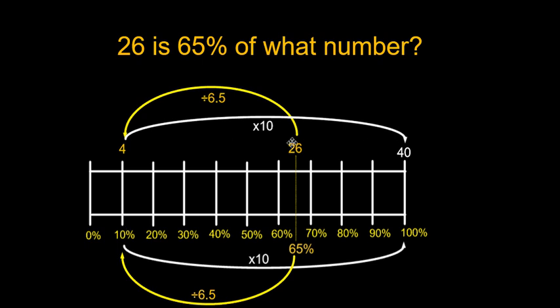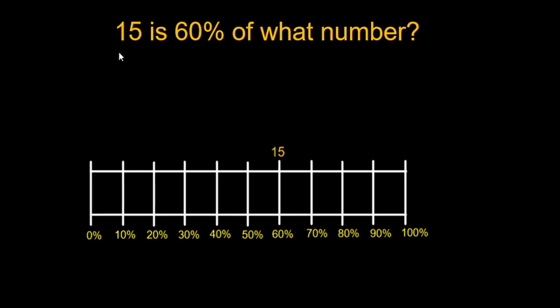Now, not all numbers are going to work out this nicely, and you may have to go to an alternative strategy. So we're going to do another problem that we have to use an alternative strategy. Let's look at this one. 15 is 60% of what number? Well, if I divide by 6, I'm going to take 15 divided by 6, which is going to give me a repeating decimal. Or, of course, I could use the fraction mixed number. But it's easier if we say, well, let's divide 60% by 3.